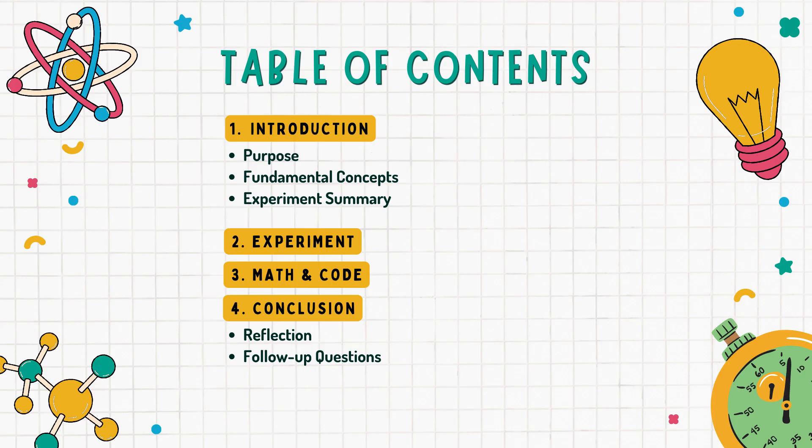Before we get started, we're going to go over the table of contents for today's lab. First, we're going to go over the introduction, which entails the purpose of this lab, some fundamental concepts, and our experiment summary. Then we're going to go over our actual experiment, then we're going to visit our math and code. And finally, we are going to go over our conclusion, where we're going to go over some reflections and follow-up questions.